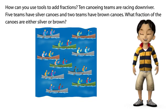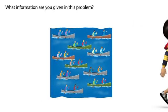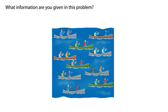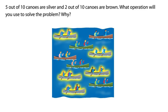Or is a very important word in that last sentence. What information are you given in this problem? Five out of ten canoes are silver and two out of ten canoes are brown. What operation will you use to solve the problem? Why?